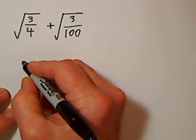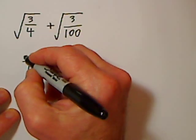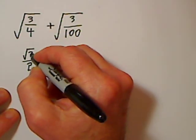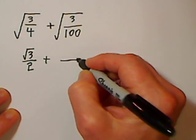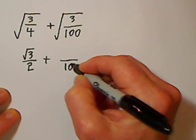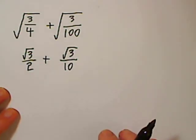So the square root of 4 is 2, but that 3 is simply stuck under the radical for now. The square root of 100 is 10, and again that 3 is stuck under the radical.